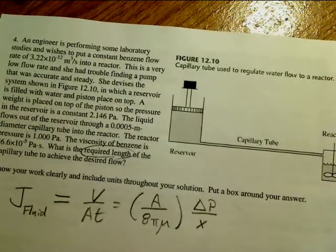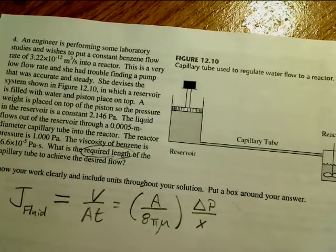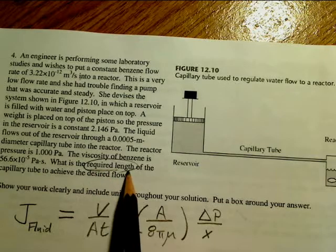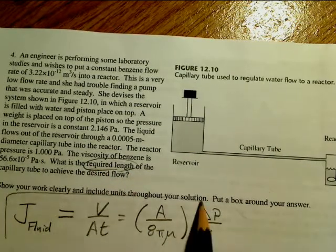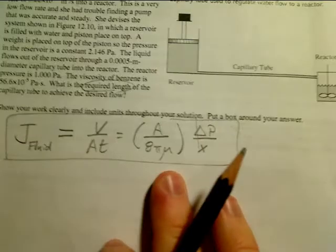Alright, on the last one, an engineer is performing laboratory studies and wishes to have a constant benzene flow. And here's the rate that they're looking for. Jump down here to the bottom and it says what's the required length. And you can see that this is a fluid flow problem just by looking at the statement of the problem. So here's the fluid flow equation.